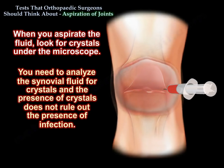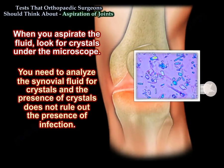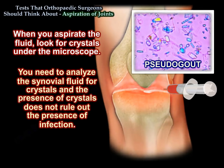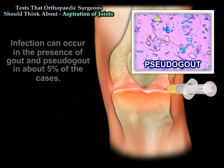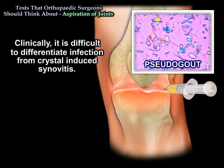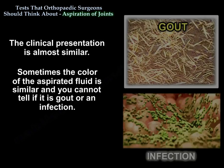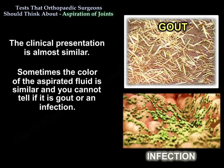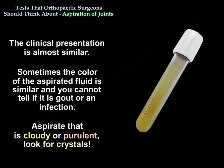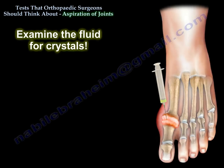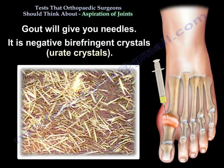When you spray the fluid, look for crystals and analyze the synovial fluid for crystals. The presence of crystals does not rule out infection; infection can occur in the presence of gout and pseudogout in about five percent of cases. Clinically it is difficult to differentiate infection from crystal-induced synovitis as the presentation is almost similar. In gout, crystals will appear as needles and are negatively birefringent urate crystals.